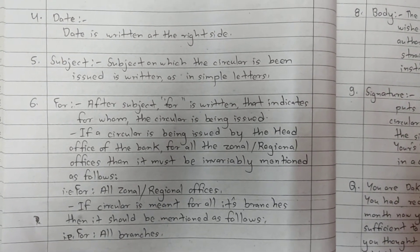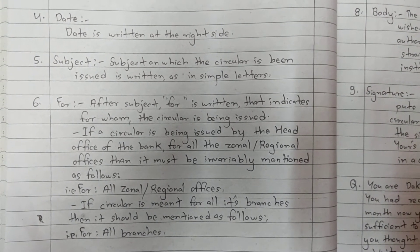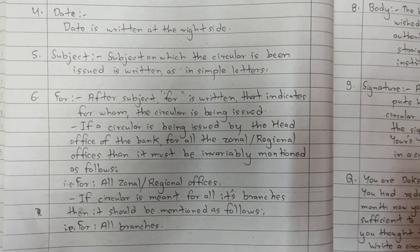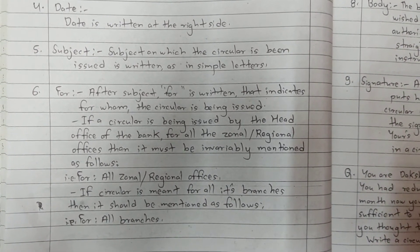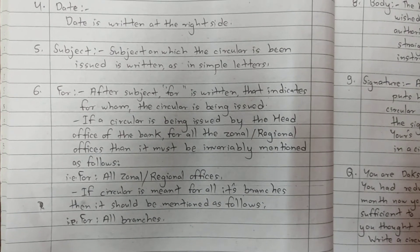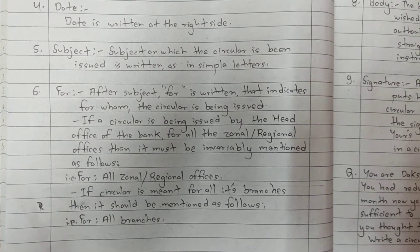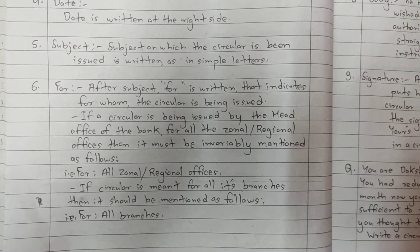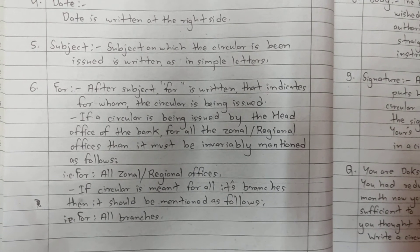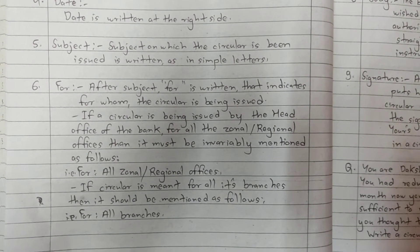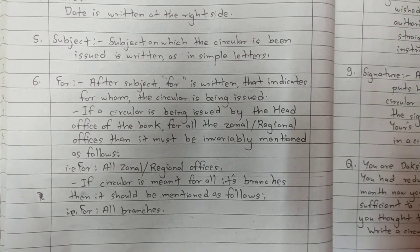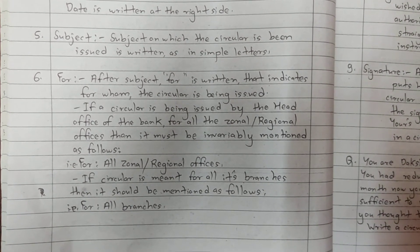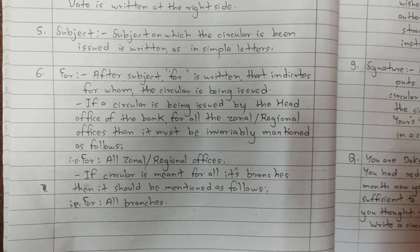After subject, 'For' is written, which indicates for whom the circular is being issued. If a circular is being issued by the head office of the bank for all the zonal or regional offices, then it must be mentioned as: 'For all zonal or regional offices.' If the circular is meant for all its branches, then it should be mentioned as: 'For all branches.'